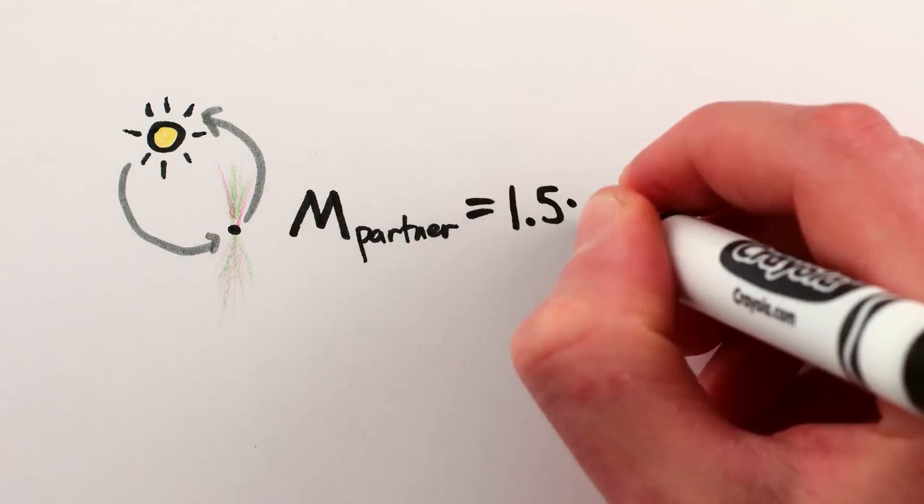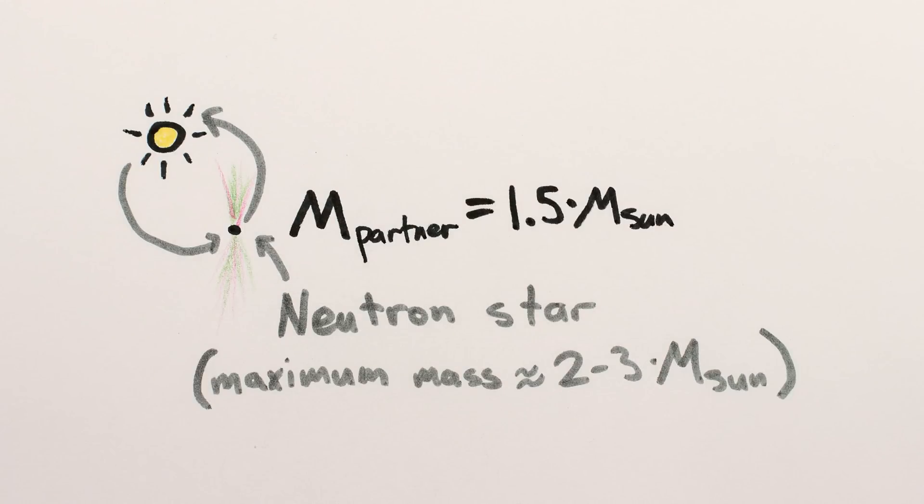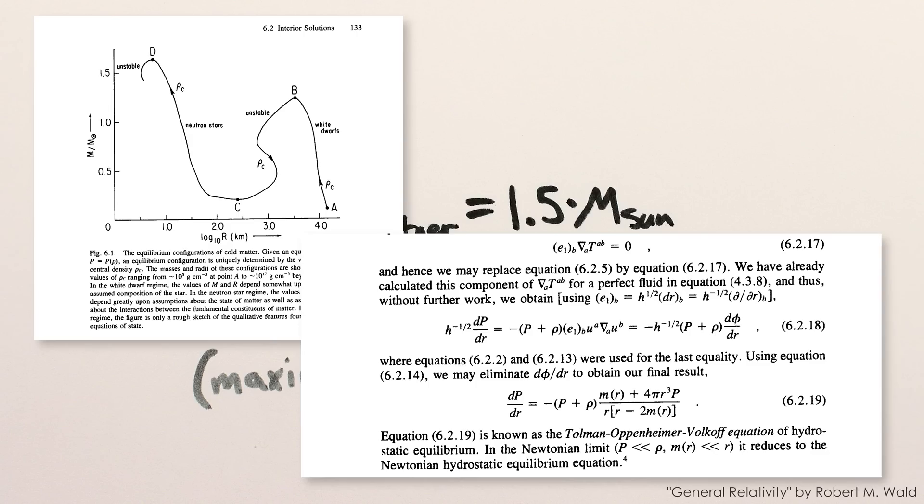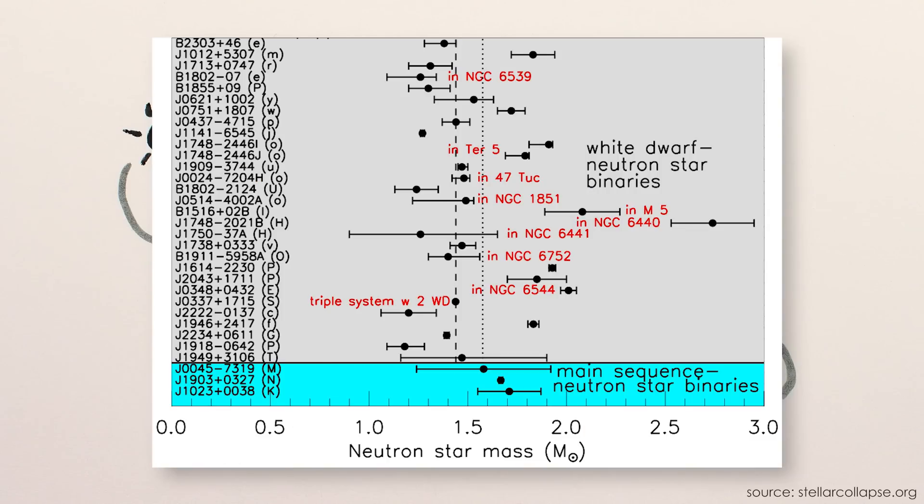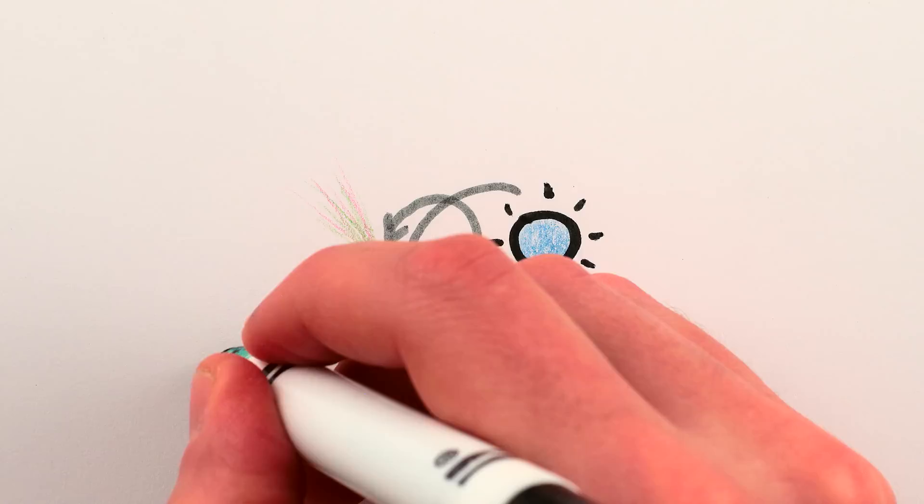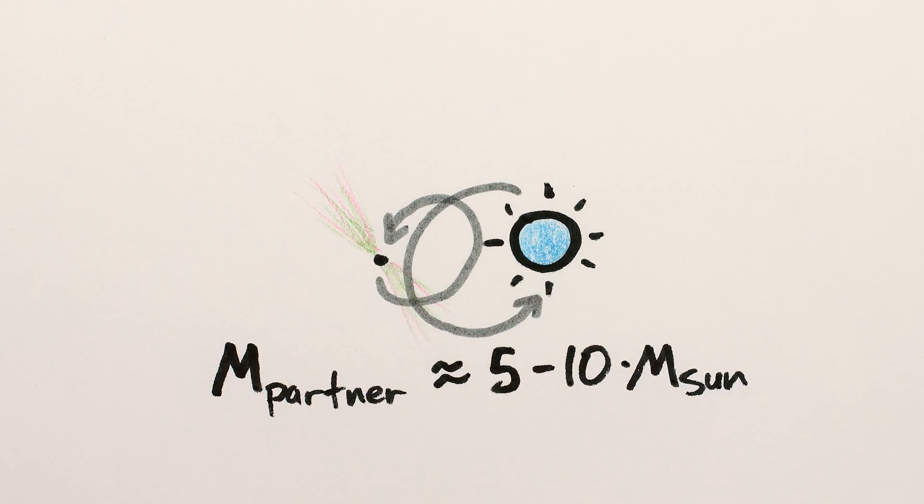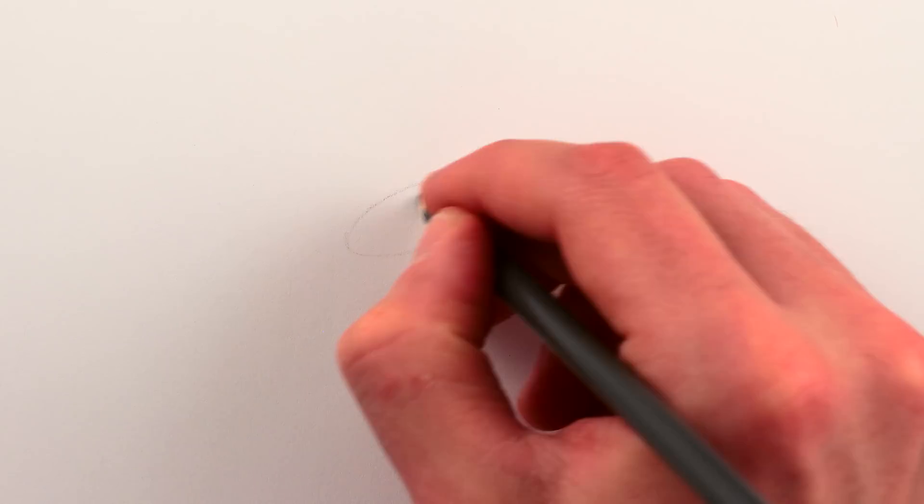Some partners are lightweight enough to be neutron stars, but neutron stars can only get so big before they collapse in on themselves. Theoretical calculations put their upper size limit at around 2 to 3 times the mass of the sun, and the biggest ones we've observed all fall inside that limit. And yet there are plenty of stars whose orbits clearly show that their X-ray-emitting partners are 5 to 10 times the mass of the sun.